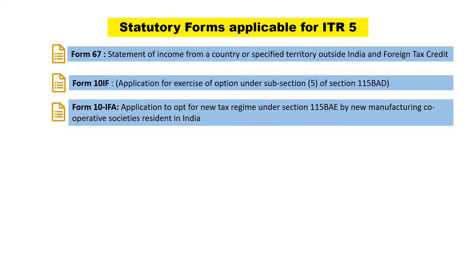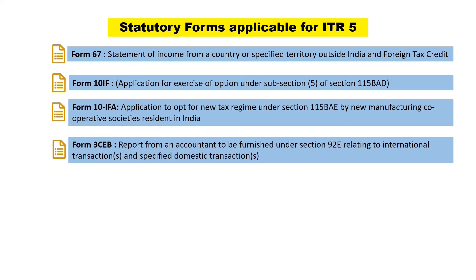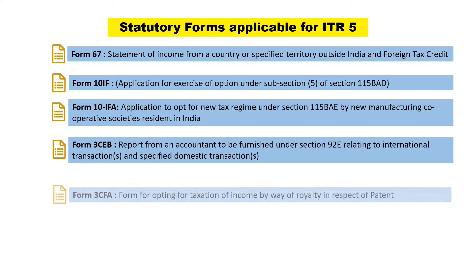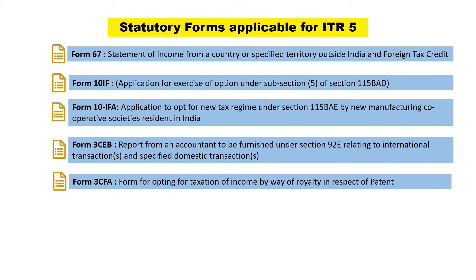There is also an addition: Form 10IFA, which is an application to opt for the new tax regime under section 115BAE by new manufacturing cooperative societies resident in India. Form 3CEB is a report from an accountant to be furnished under section 92E relating to international transactions and specified domestic transactions. Form 3CFA is a form for opting for taxation of income by way of royalty in respect of patents.